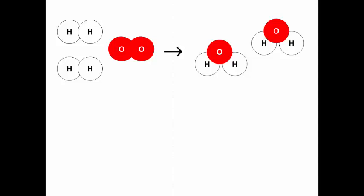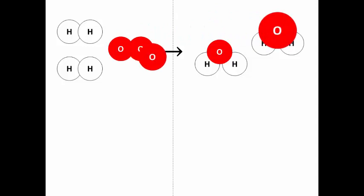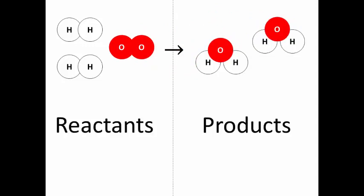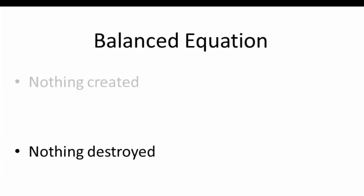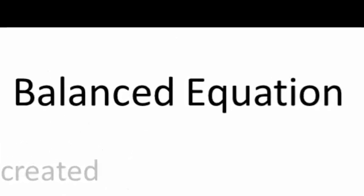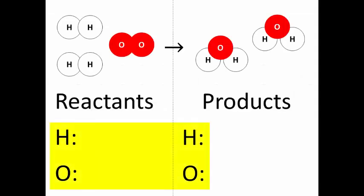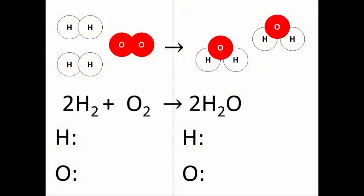It hasn't disappeared. What about the oxygen atoms? That oxygen atom ended up there after the reaction, and that one there. Every oxygen atom we had at the start in the reactants is still there at the end amongst the products. So no matter has been created or destroyed — the equation is balanced. Let's show this in another way: let's count the number of hydrogen and oxygen atoms amongst the reactants and amongst the products to see whether the equation is balanced.